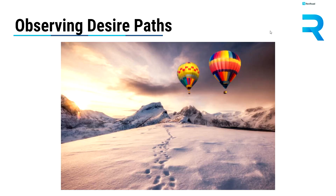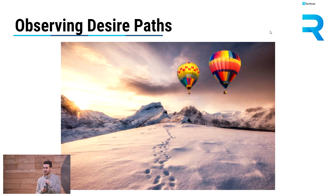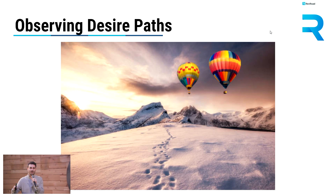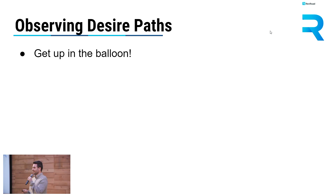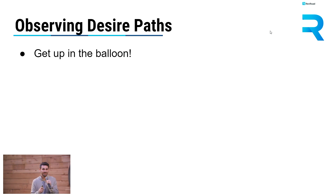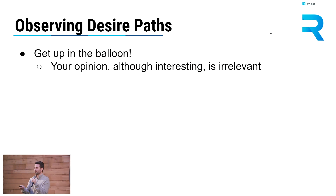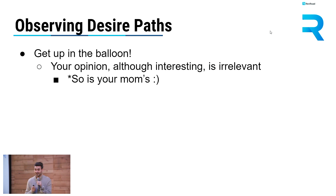So how do we observe desire paths with our customers? The story goes that at OSU, the gentleman who had the idea to pave over the existing desire paths waited until a snowy day, went up in a hot air balloon with his sketching pads, and drew out exactly where he saw the students going — the paths in the snow. So what do we need to do? We've got to get up in the balloon. We've got to get outside of our echo chamber and stop talking to people who will just validate us saying, 'Great job, that's an awesome idea.' We need to actually talk to people who we hope will be buying our product or service.